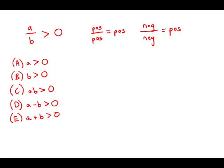So right away that means that answers A and B are out. We have no guarantee that a or b is positive because they both could be negative. Now notice with the product in C, if we have a positive times a positive, that equals a positive.